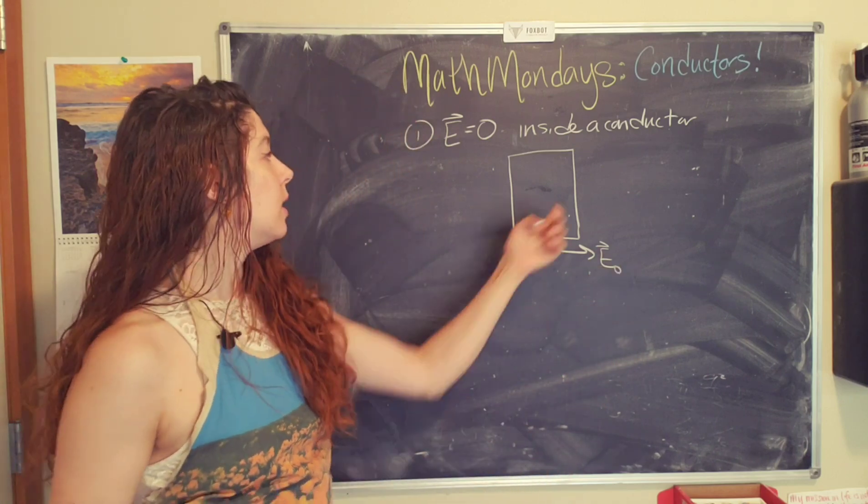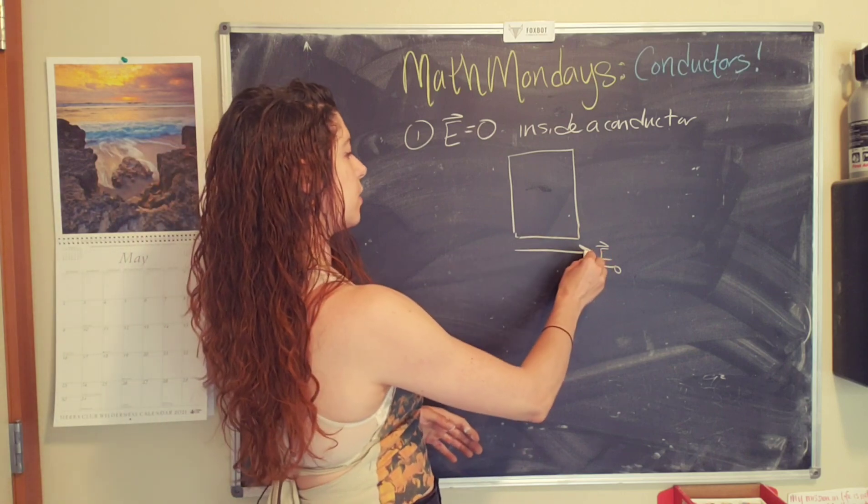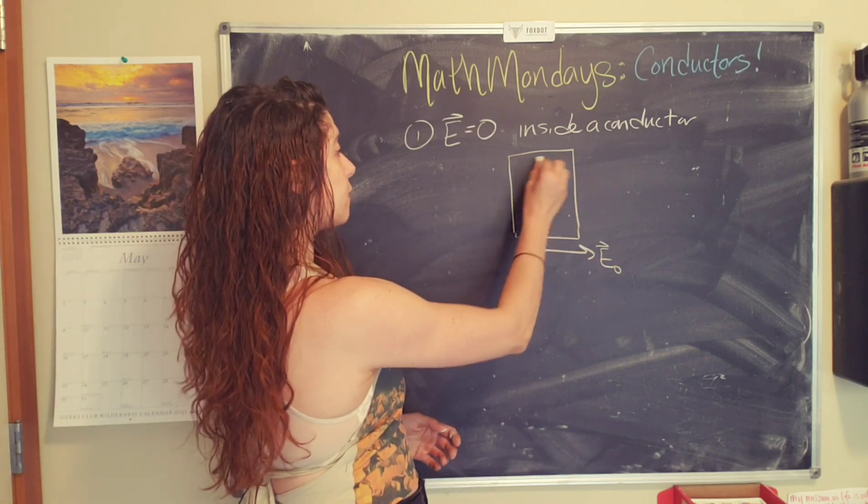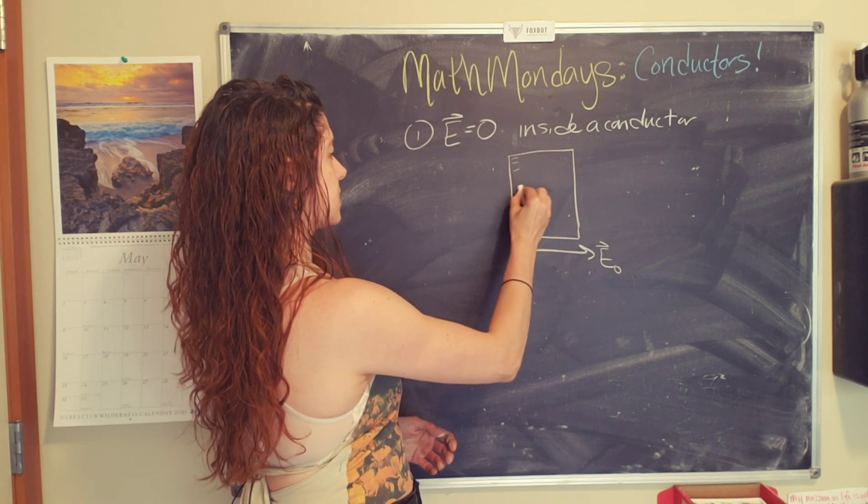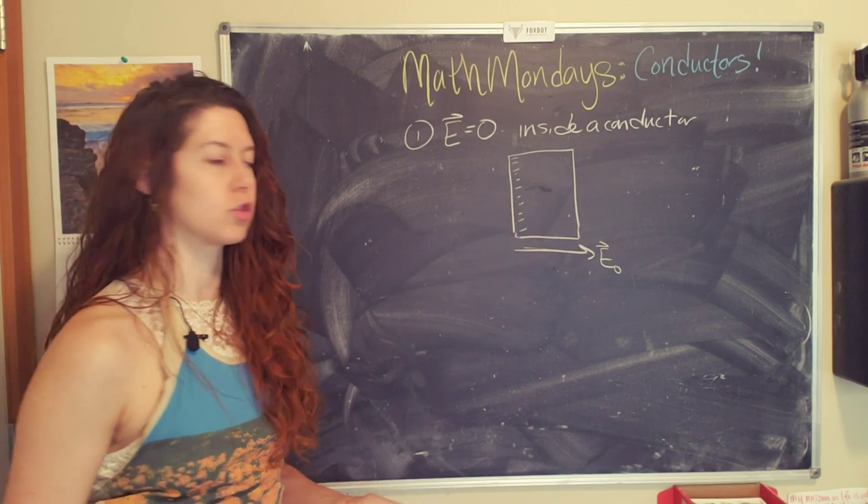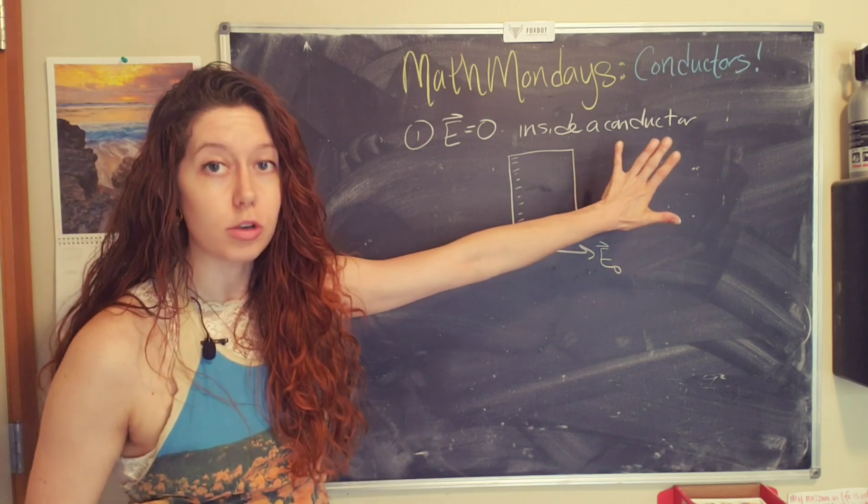So the free electrons, because of the force of this external electric field, they are going to flow to the left side. So these are all of our tiny little free electrons. And because electrons are negative, they all flow to the left side, that leaves a surplus of positive charge on the right side.